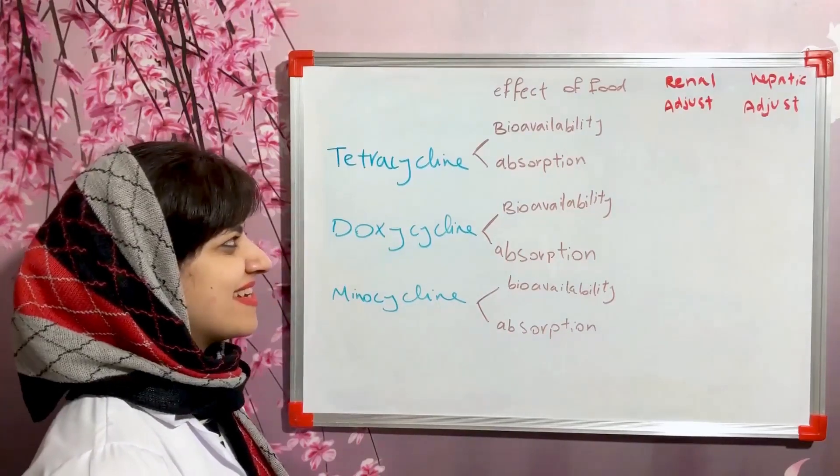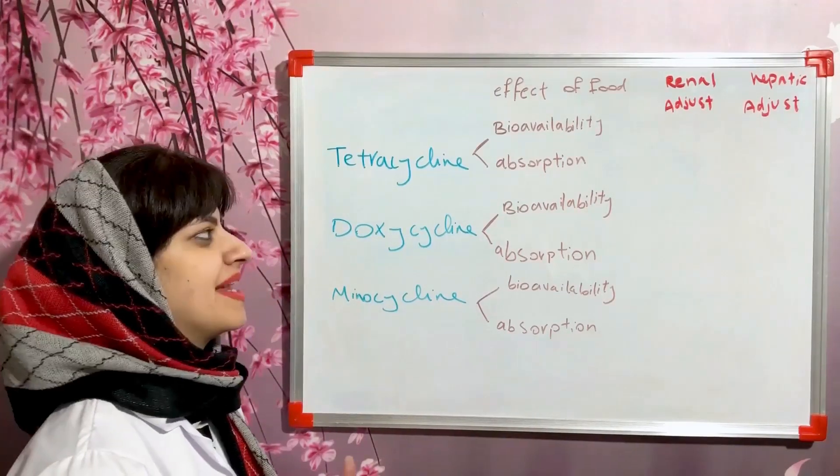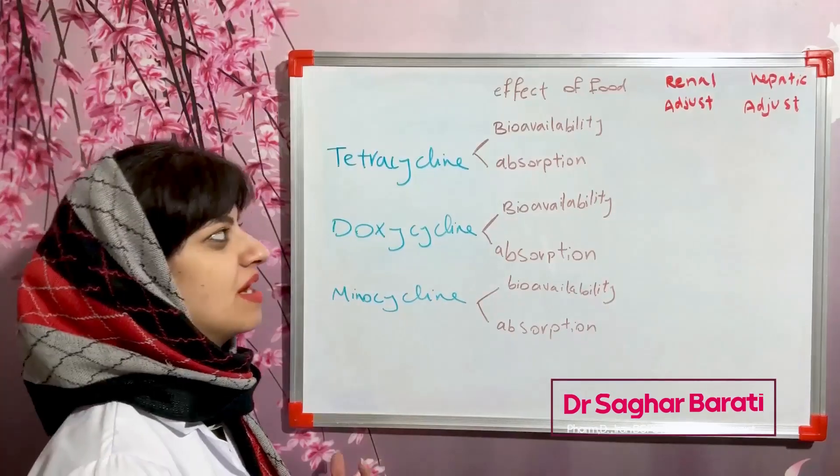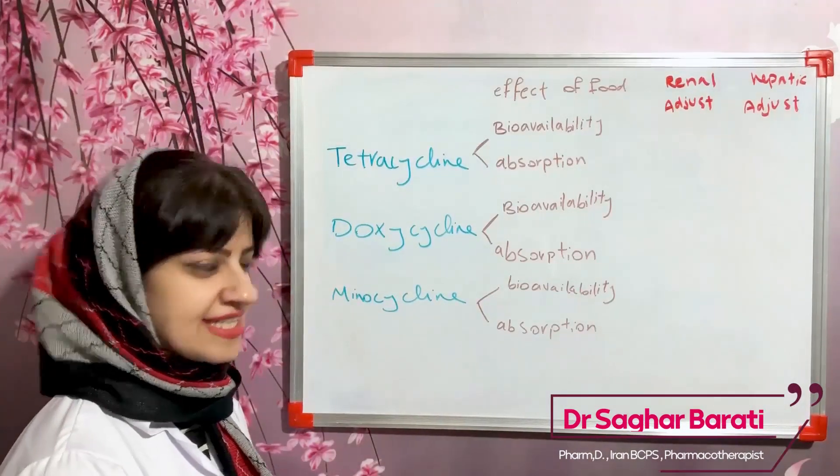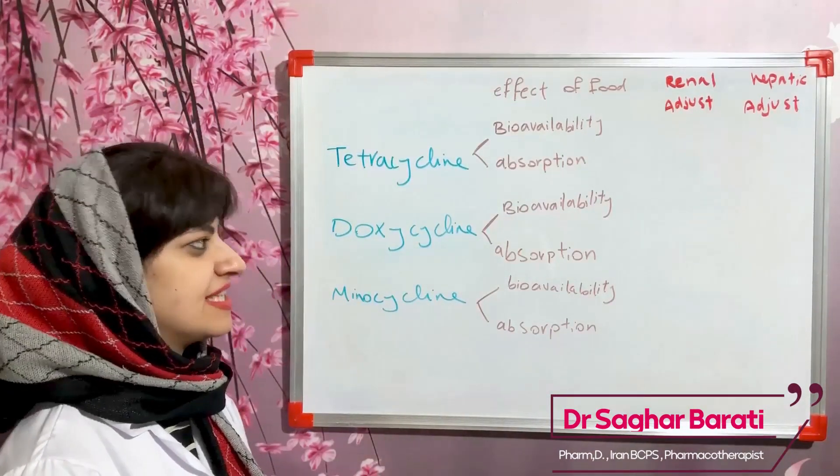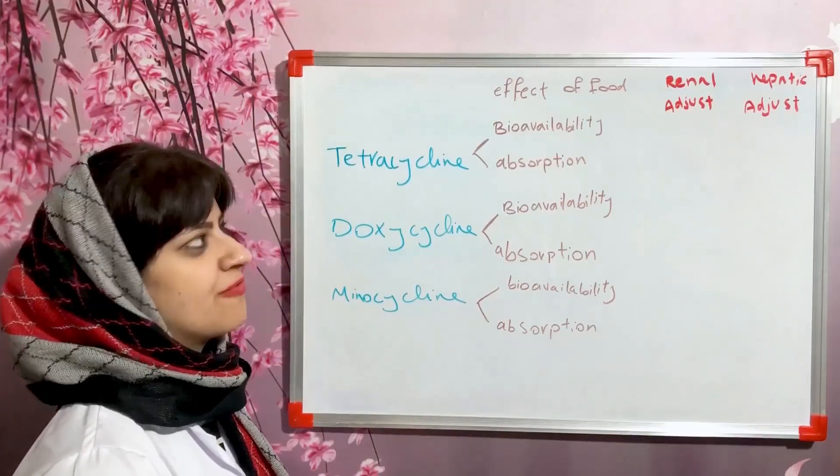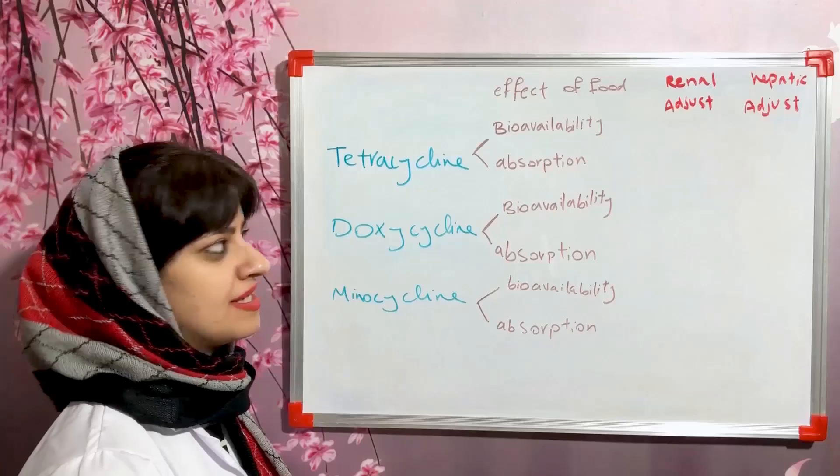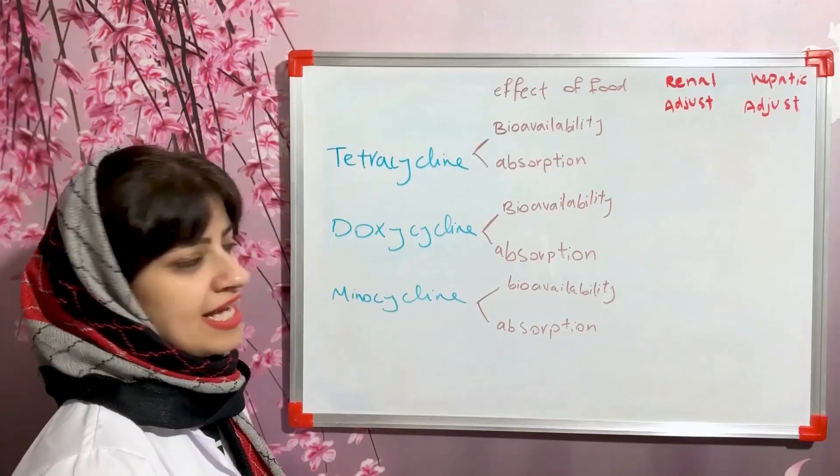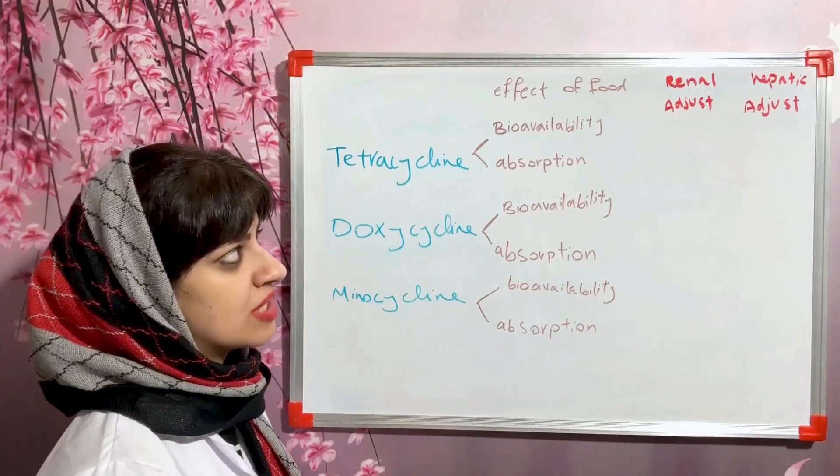Hi everyone, in this video we want to compare three antibiotics from the tetracycline family: tetracycline, doxycycline, and minocycline. We'll examine the effect of food on their bioavailability and absorption, and also if they need dose adjustment in renal or hepatic failure.